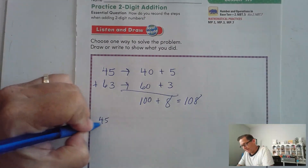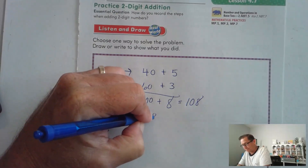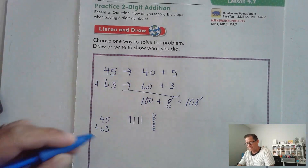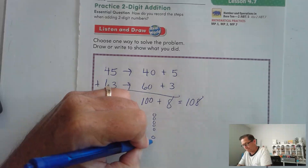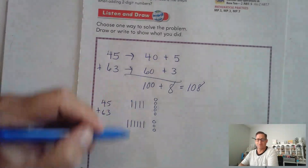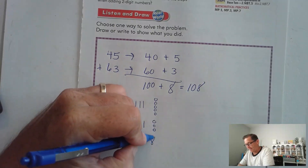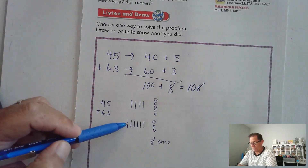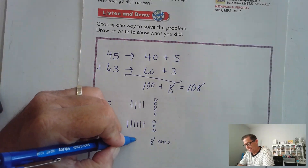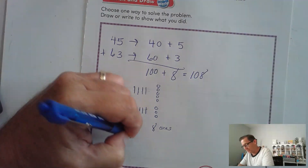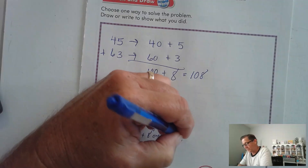We could have done models. How many ones do we have? We have 8 ones. And we have 10 tens. Ten tens is 100, plus the 8 ones: 108.